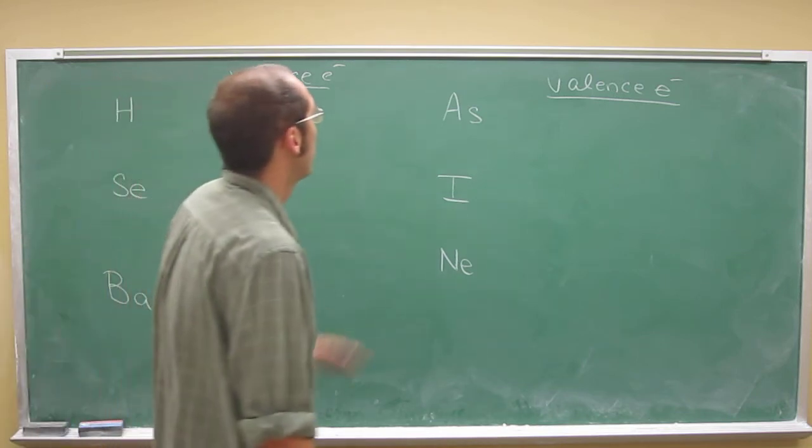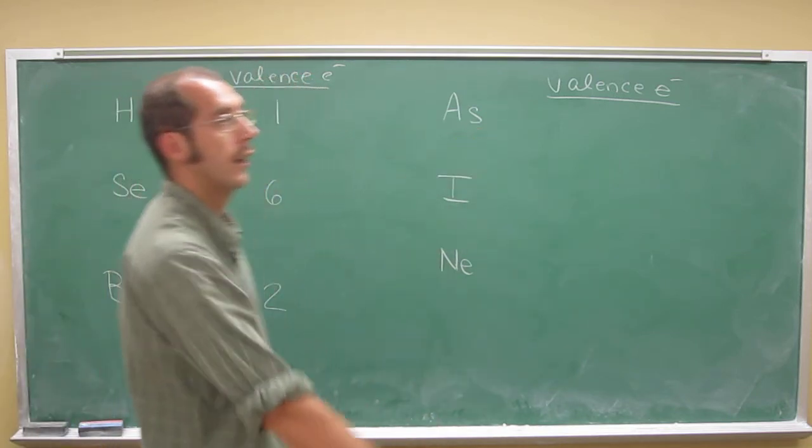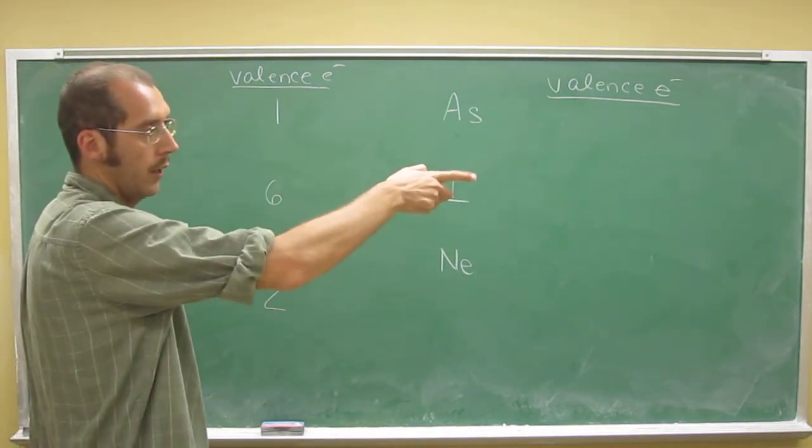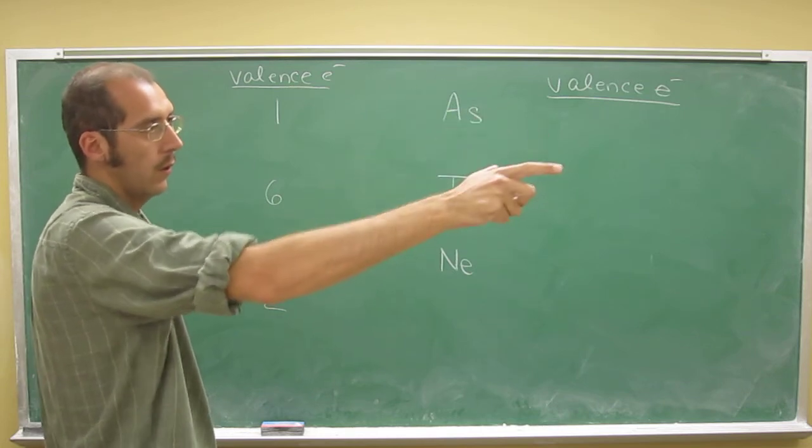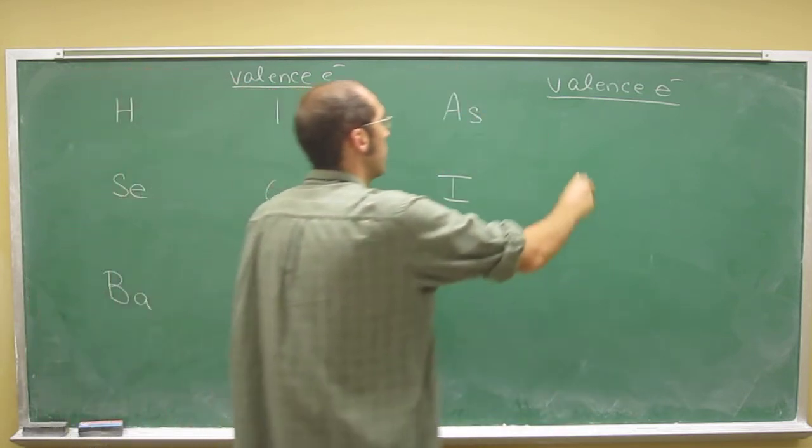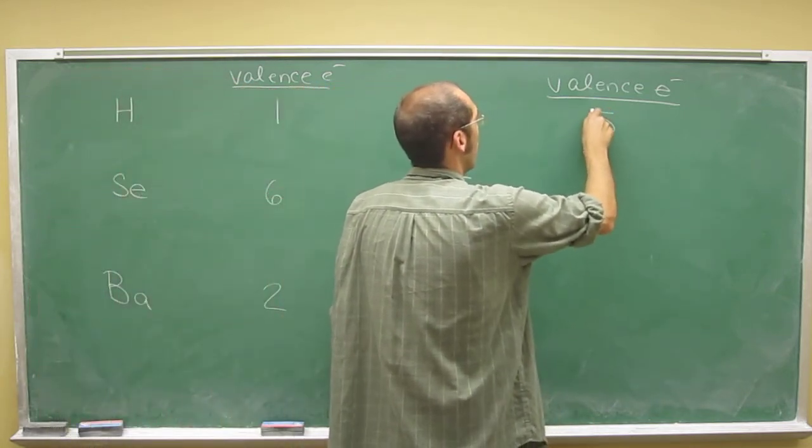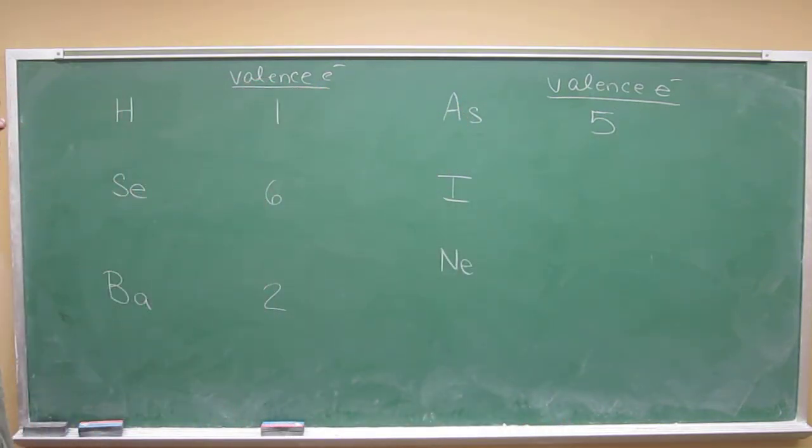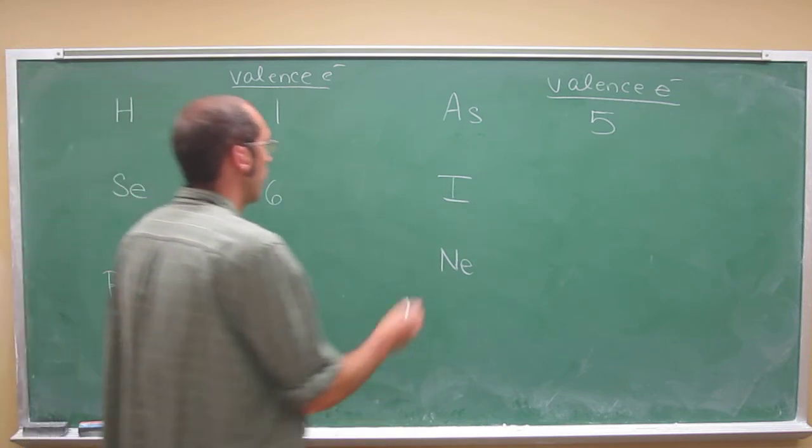Arsenic is in group 15, way over here in the P block. So count them up. One, two, three, four, five valence electrons. So hopefully you can see the trend now that we're doing these types of things over and over.